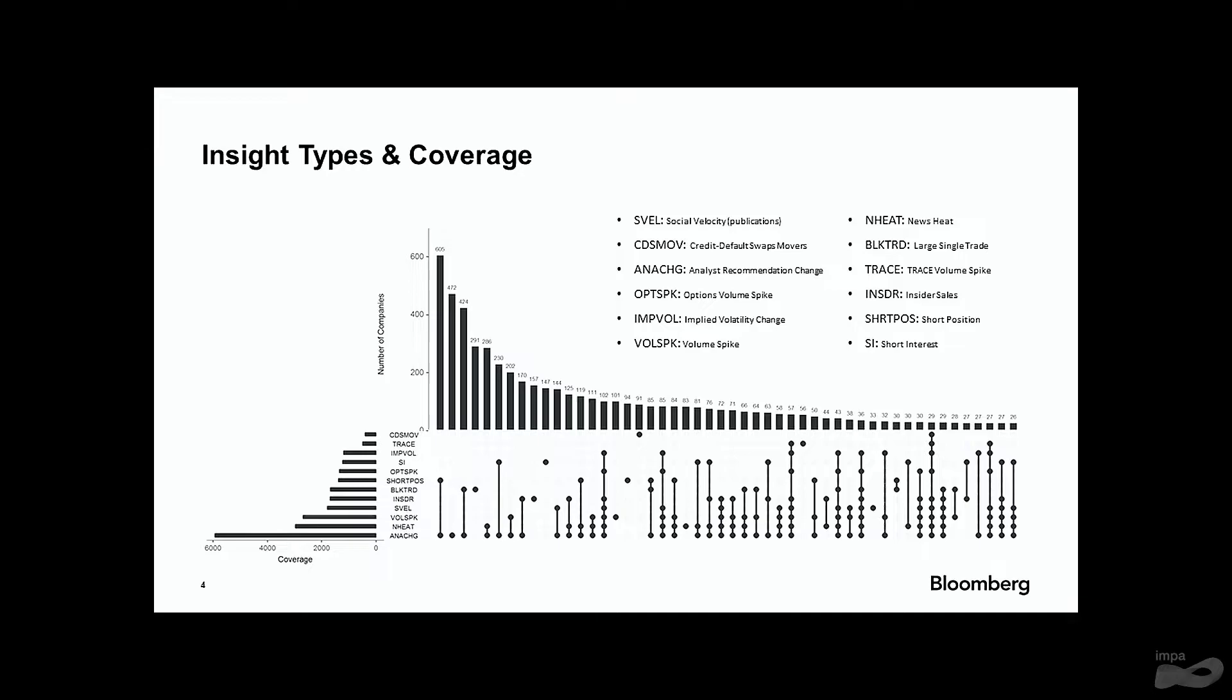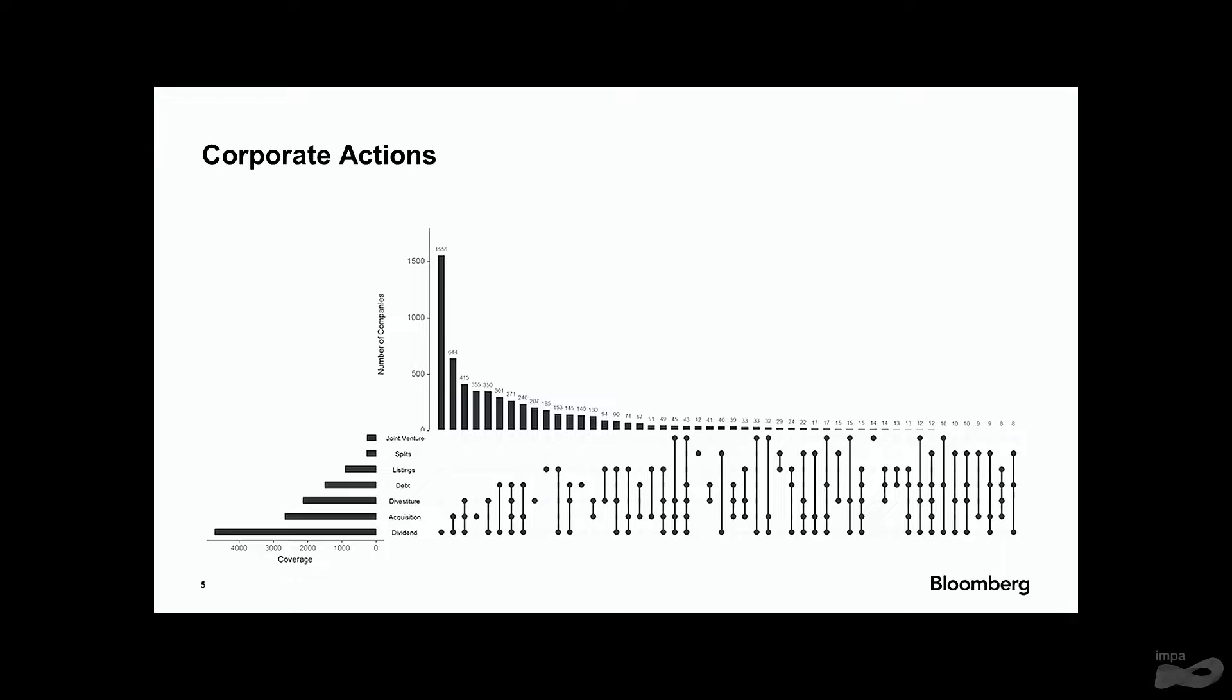Companies have analyst change and short position news and nothing else. Around 600 of them are there. And the next scenario is only analyst change. There are around 500 companies just have analyst change news and nothing else. And as we go to more complex cases, then we have more kinds of news. They are very rare, actually. They become rare. So that's the universe we are going to look at.